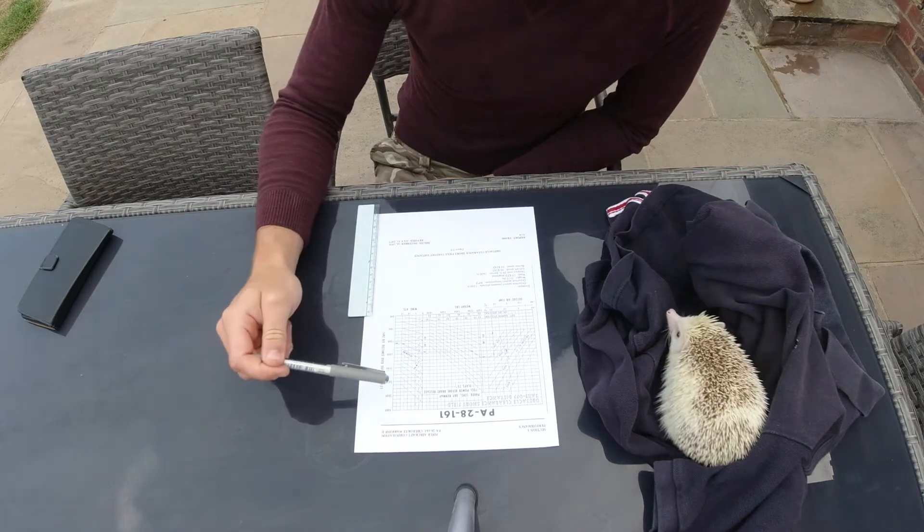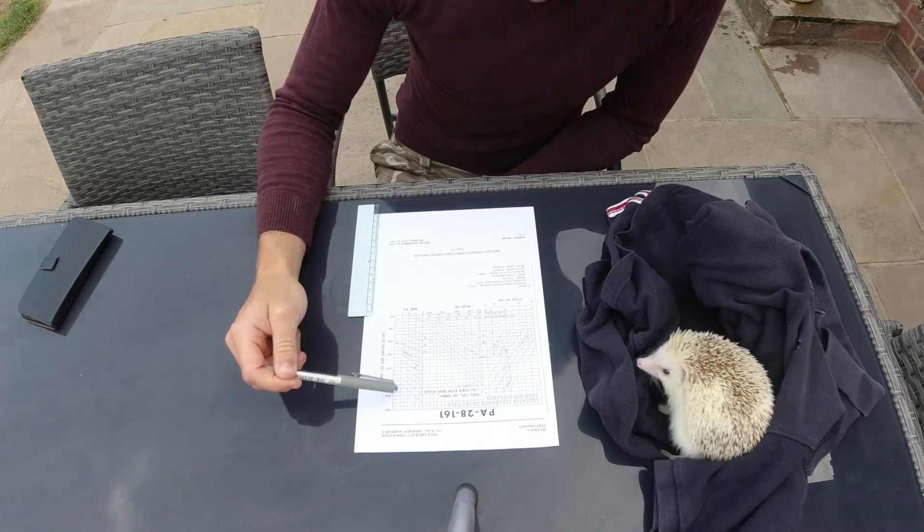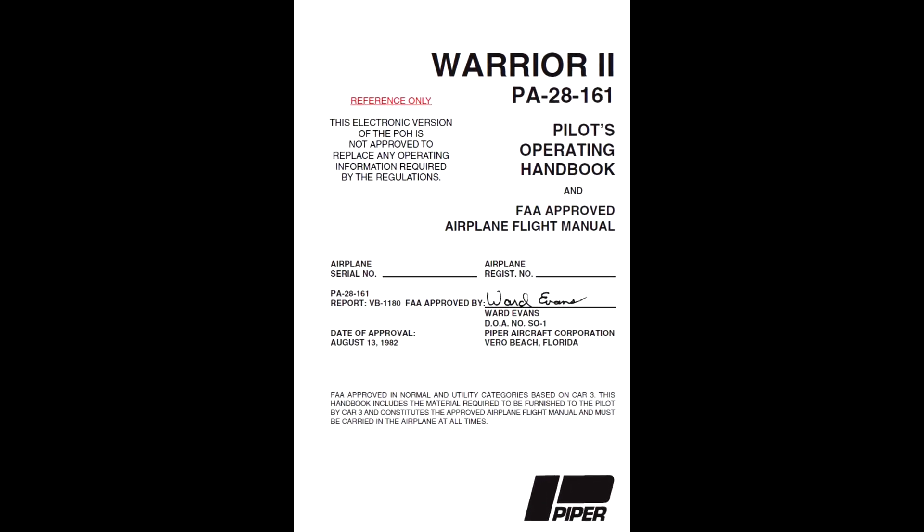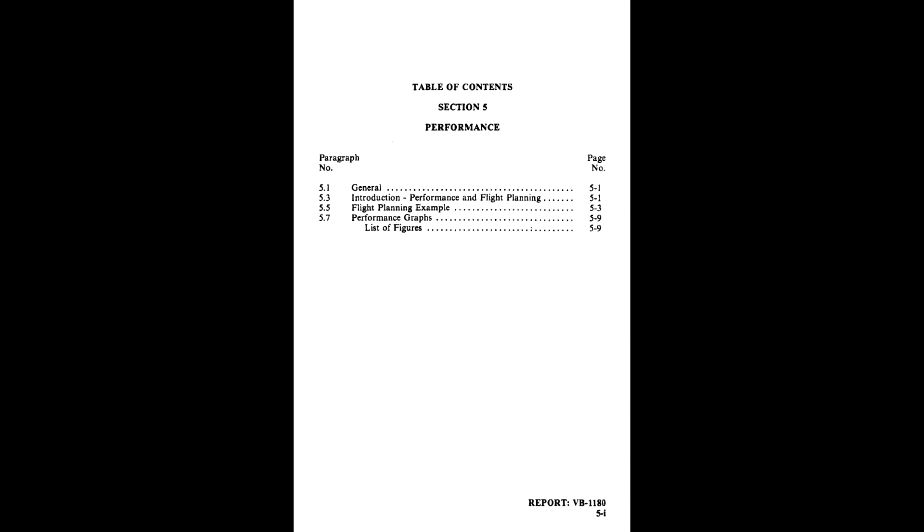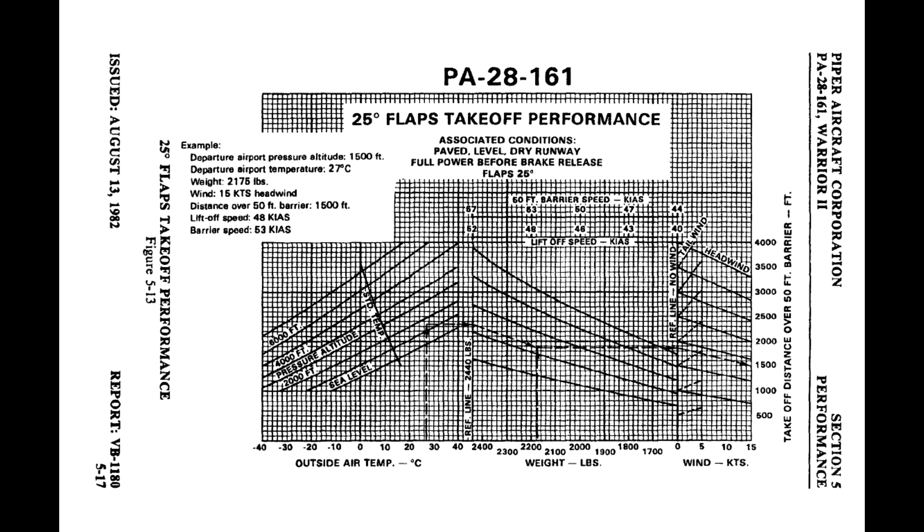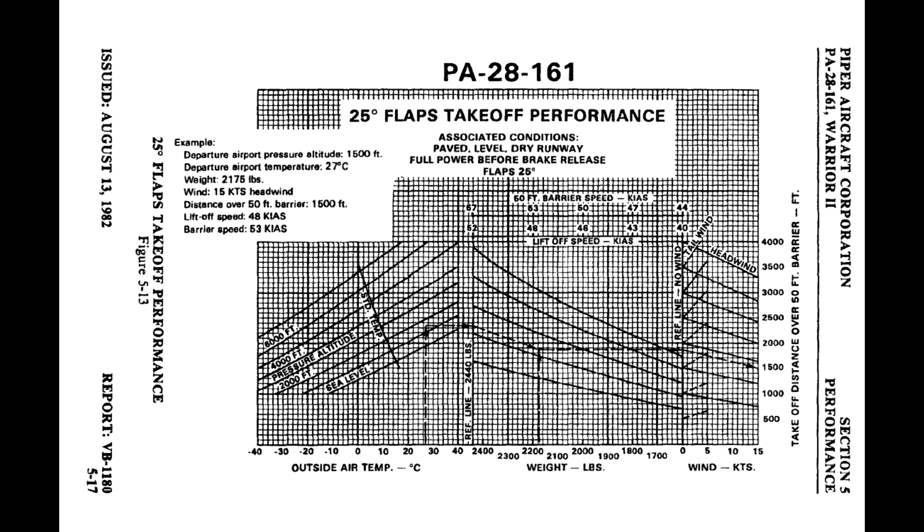First things first is where we actually get hold of this graph. This graph comes from the Pilot's Operating Handbook for the aircraft in question I've chosen, the PA28-161, it's a Warrior II, and this comes from Section 5 Performance, and whichever aircraft you get the POH for is going to come from the Performance section.